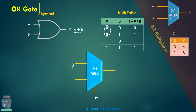So I am going to pass B input from here. And when A is equal to 1, you can see the output will be 1 irrespective of B. So I am going to pass 1 from here so that the output will be the functionality of A plus B. This is how we can implement an OR gate.